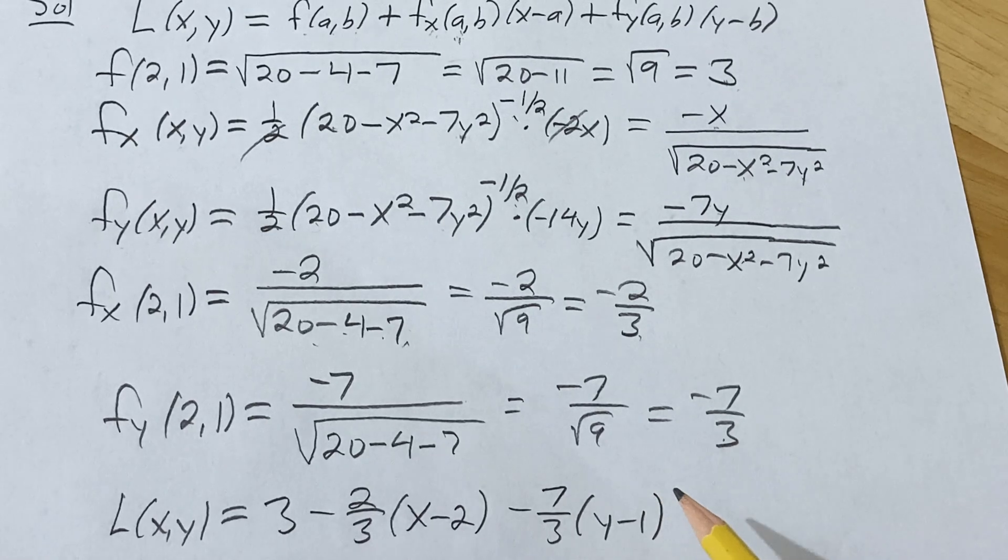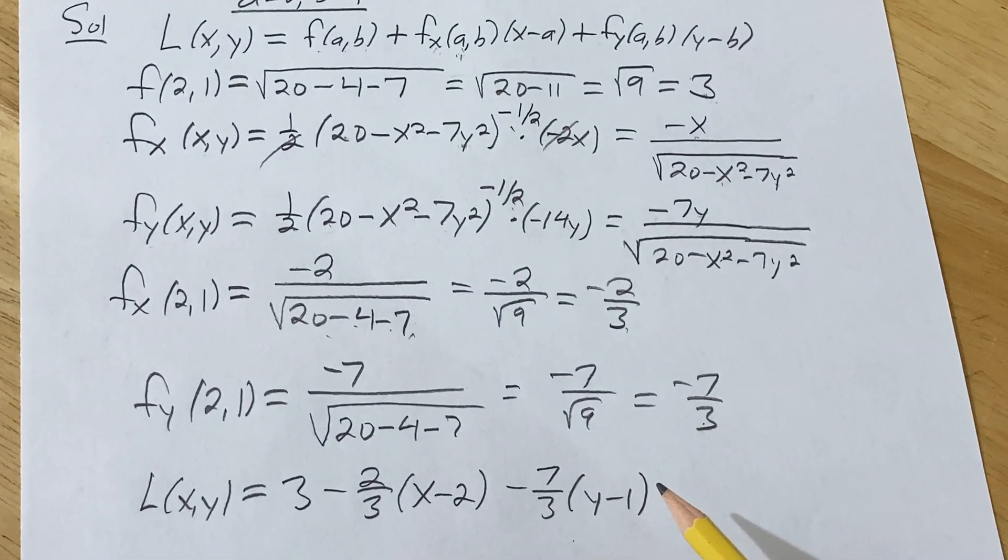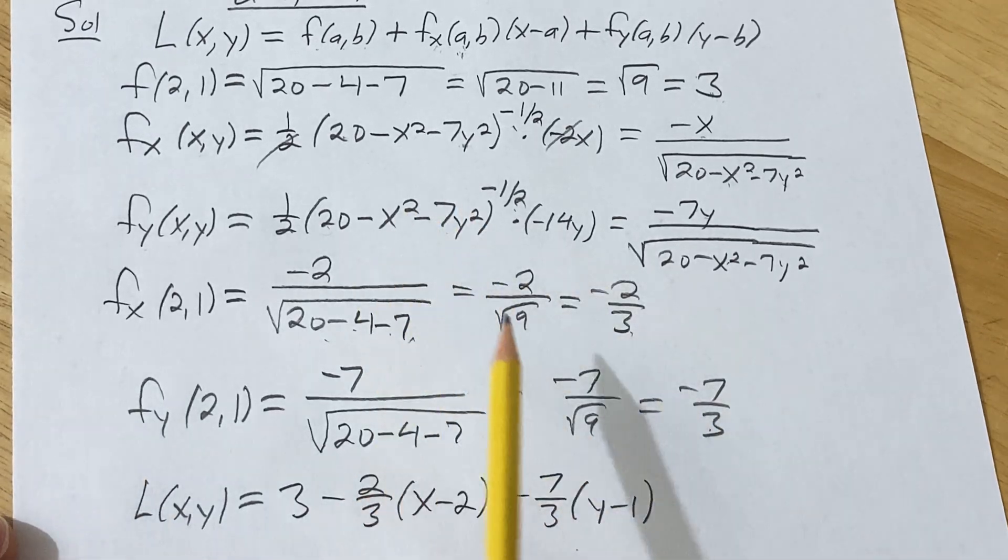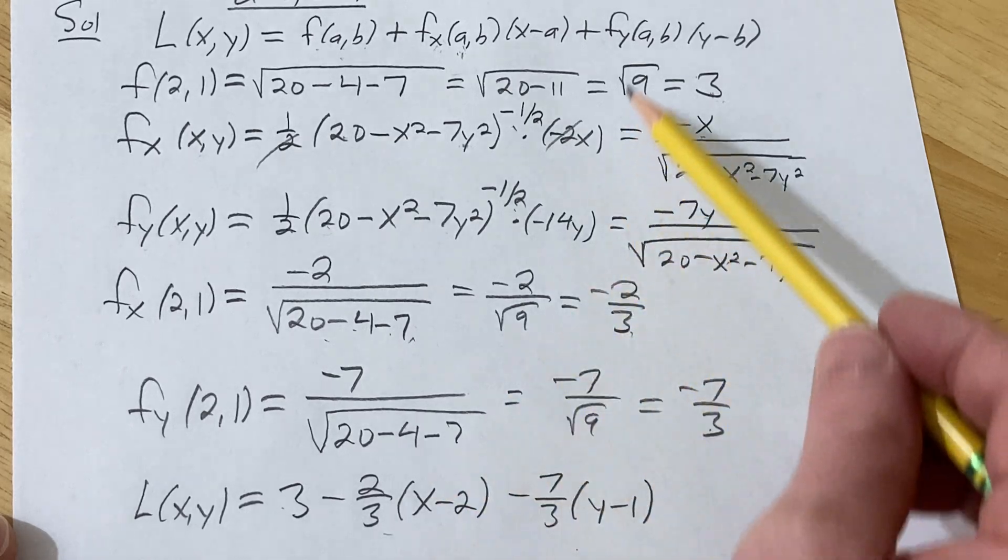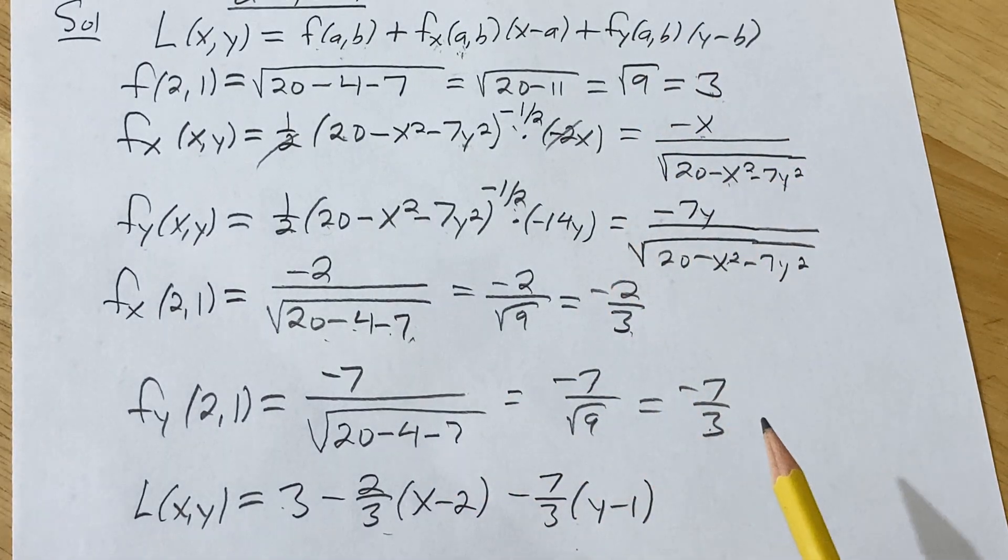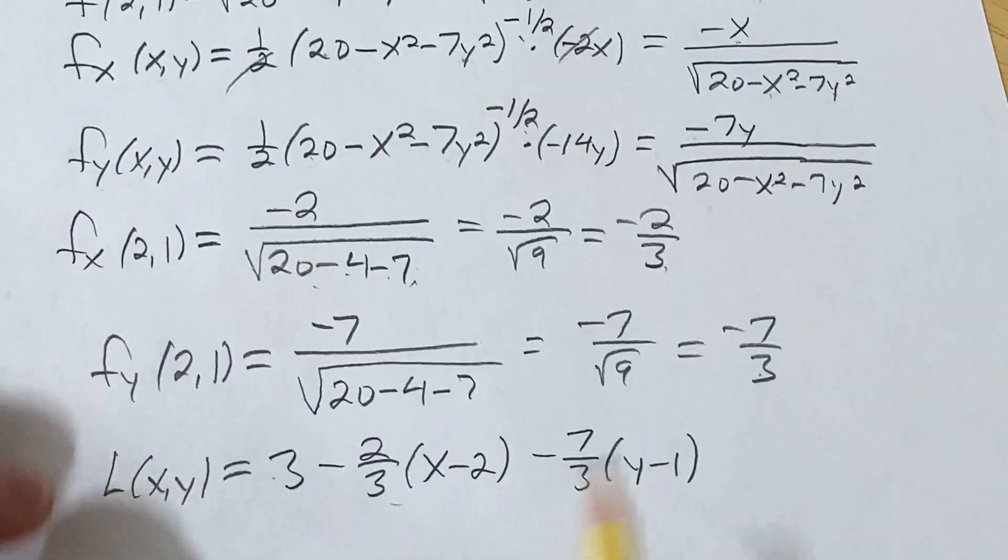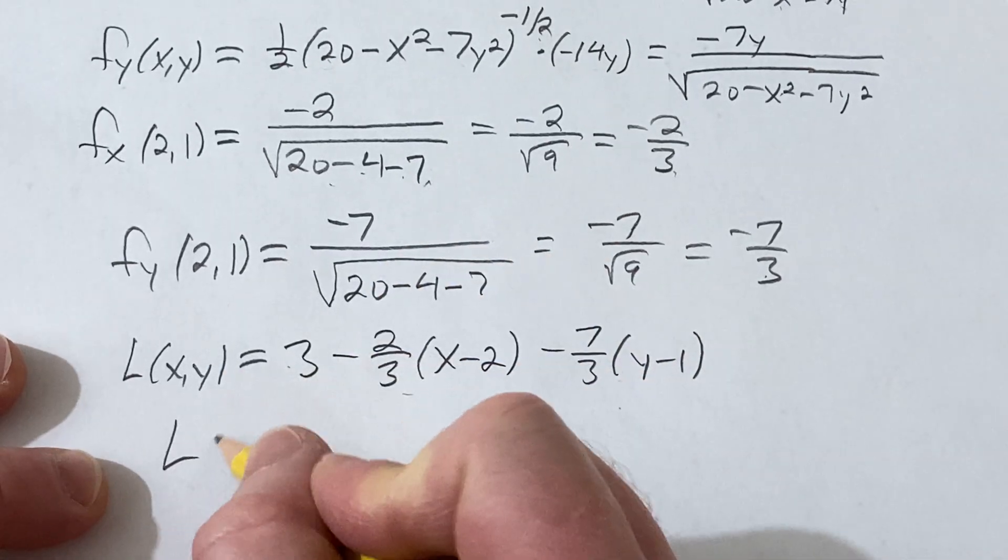So there you can see, zoom out a little bit, see if you can see a little bit better. So you can see how everything matches, right? We've got our 3, our -2/3, our -7/3. I'll zoom back in a little bit. So let's clean this up. So this is L(x,y).